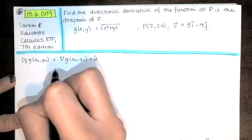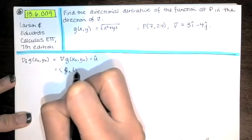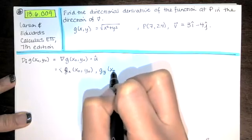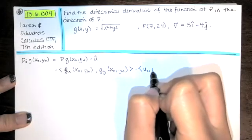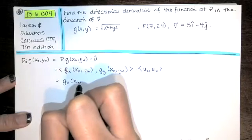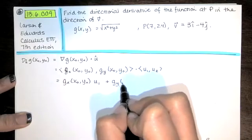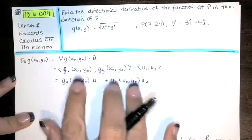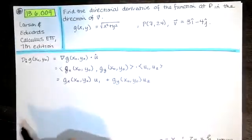This gradient can also be written as the partial derivative of G with respect to X at X-naught, Y-naught times I-hat, plus the partial derivative of G with respect to Y at X-naught, Y-naught times J-hat. The unit vector has components U1 and U2. Taking that dot product gives the directional derivative formula. Some students may be familiar with this form, but it's really just the gradient dotted with the unit vector.